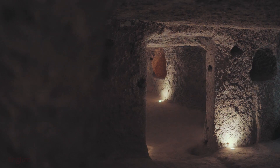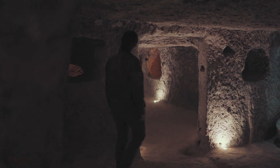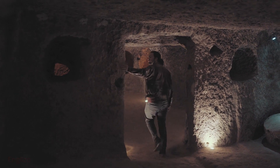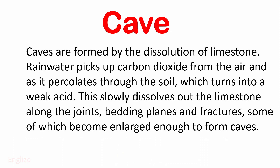Cave: Caves are formed by the dissolution of limestone. Rain water picks up carbon dioxide from the air and, as it percolates through the soil, turns into a weak acid. It slowly dissolves out the limestone along the joints, bedding plates, and fractures, some of which become enlarged enough to form caves.